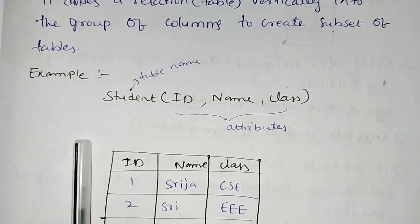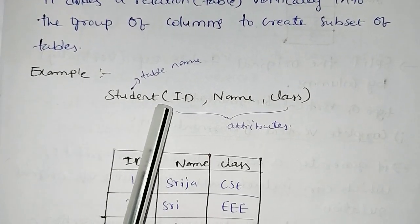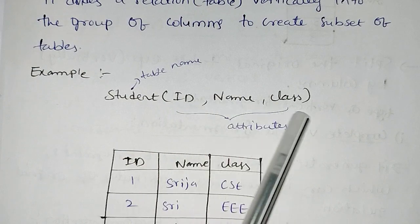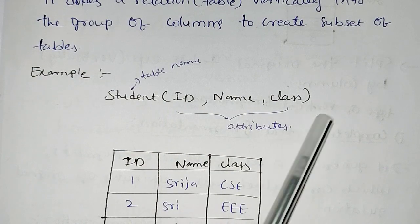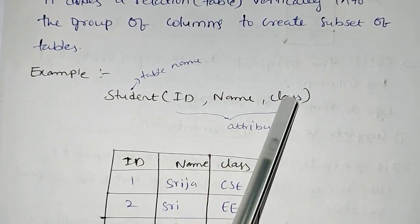Now let's look at the example here. The student table has attributes: name, ID, name, class. So we divide the attributes here.